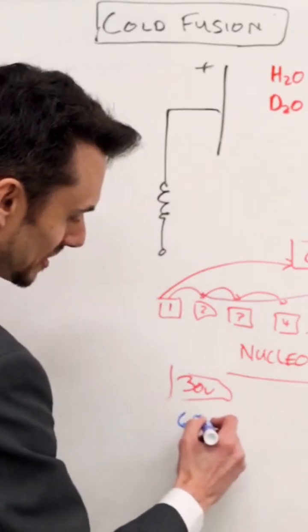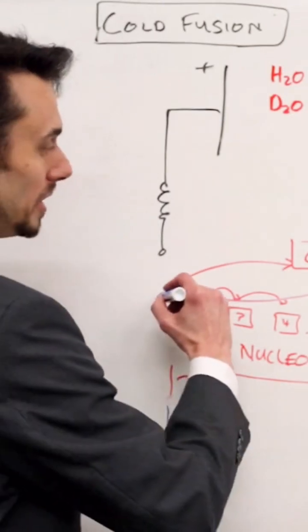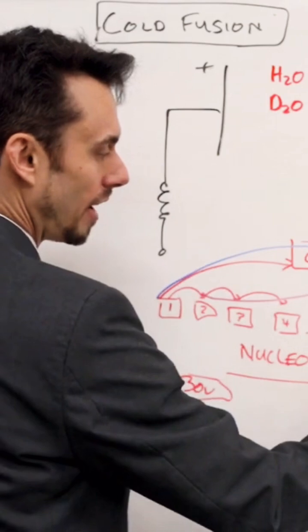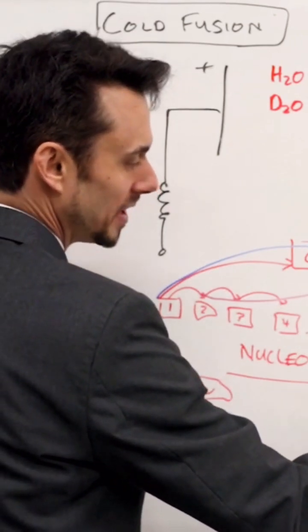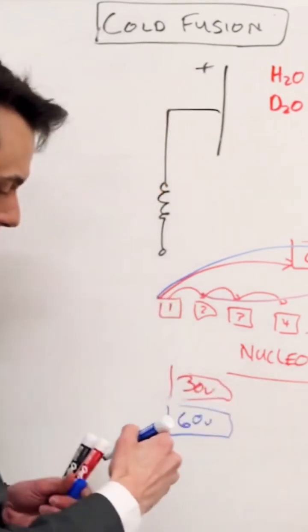Let's say we do 60 volts. Okay, so now we do 60 volts input, and then we can go to iron, aluminum, titanium, and gold.